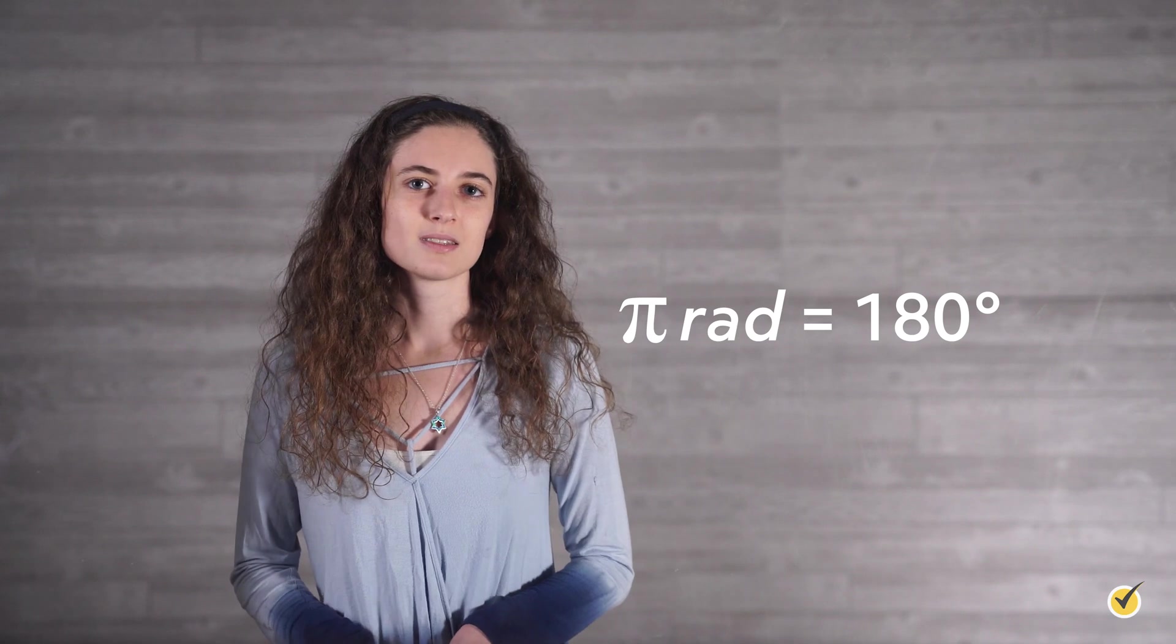Remember, you can convert between radians and degrees using the conversion pi radians equals 180 degrees. We then use our unit circle with angles in standard position to find the trig values of common angle measurements. I hope this review was helpful. Thanks for watching, and happy studying!